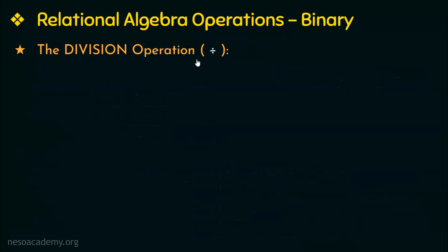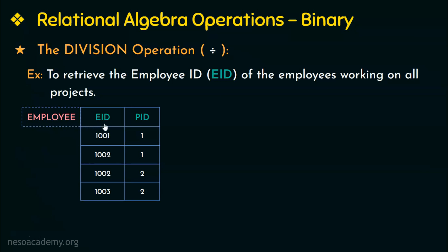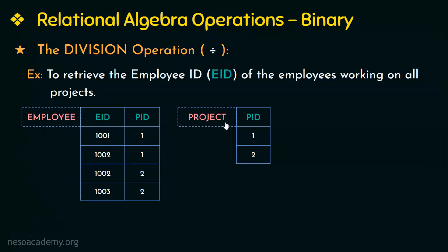Next we are going to learn about the division operation, denoted by its symbol. To understand it, consider this example: I want to retrieve the employee id of the employees working on all the projects. Please note that when we see the keyword 'all' in a query, we need to use the division operation. Other examples could be students enrolled in all the courses, or persons having a bank account in all the banks. So whenever we encounter the keyword 'all', we use the division operation.